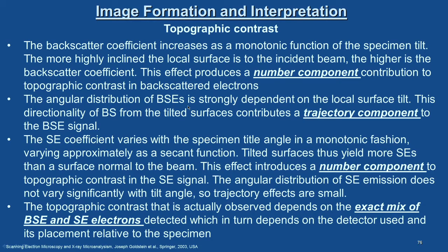The angular distribution of backscattered electrons is strongly dependent on local surface tilt, and this directionality from the tilted surface contributes a trajectory component to the BSE signal. The secondary electron coefficient varies with specimen tilt angle in a monotonic fashion, varying approximately as a secant function — in opposition to the cosine function for BSE. Tilted surfaces yield more secondary electrons than surfaces normal to the beam. This introduces a number component to the topographic contrast in the SE signal. The angular distribution of SE emission does not vary significantly with tilt angle, so trajectory effects are small for SE.